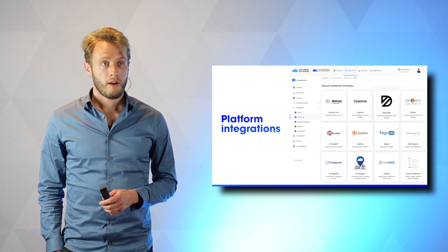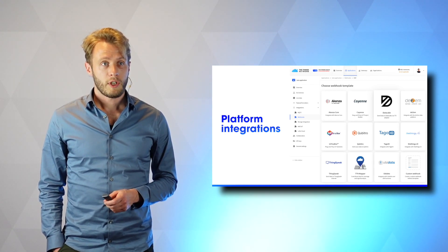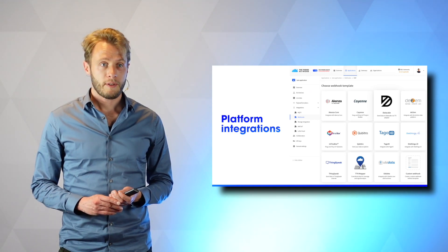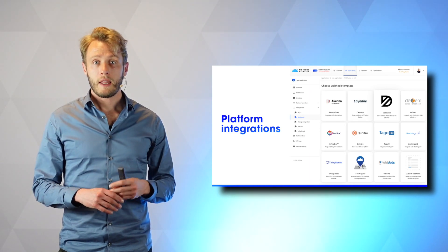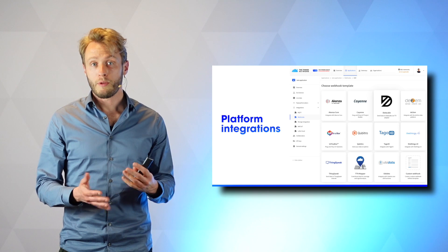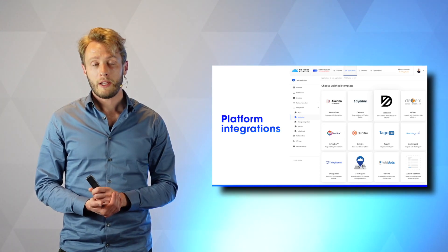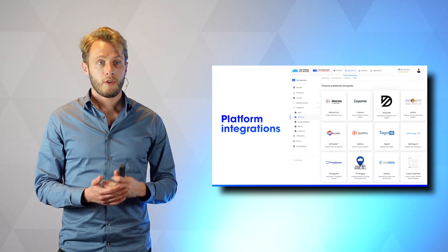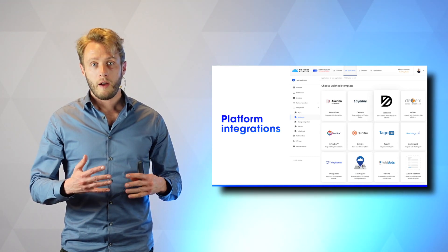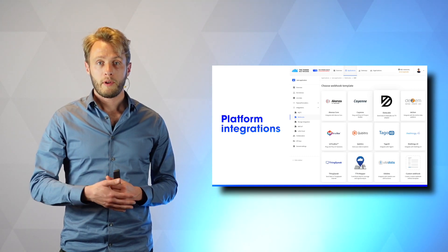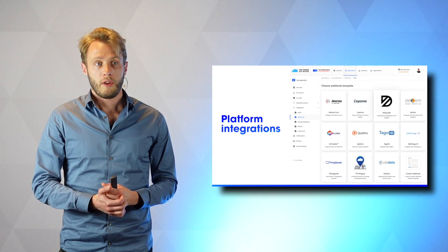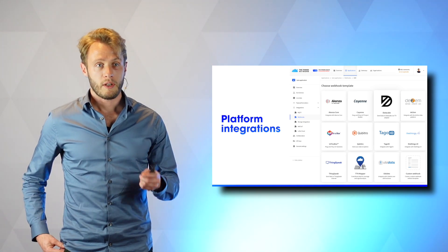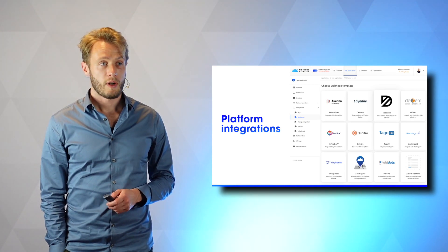You can click here in the console which integration you want to configure for your application. And underneath this is also driven by an open source repository. So if you are building an IoT platform and you want to have your logo here, then you can go to our GitHub, the Things Network account, the Webhook templates repository, and you can open a pull request and configure your own integration and we'll make it part of our next release.